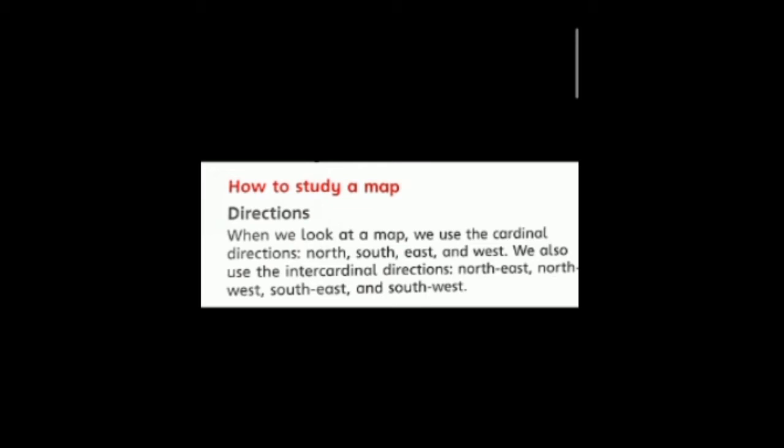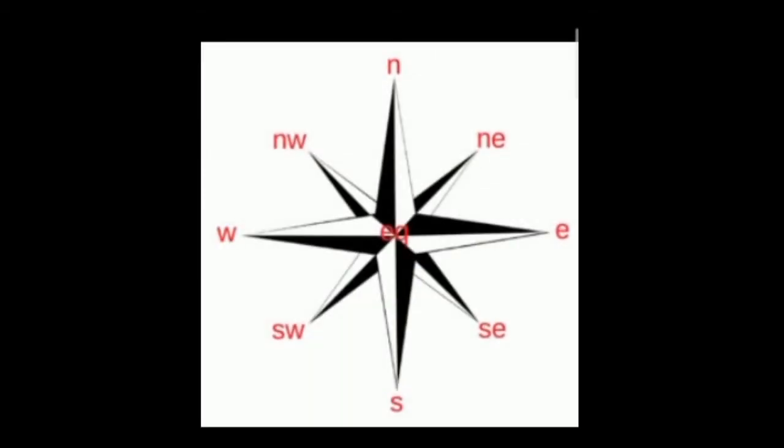You can see clearly in this picture: N denotes north, S denotes south, E denotes east, and W denotes west. NE means northeast, SE means southeast, SW means southwest, and NW means northwest. N, S, E, W are the cardinal directions, but NE, SE, SW, and NW are intercardinal directions.